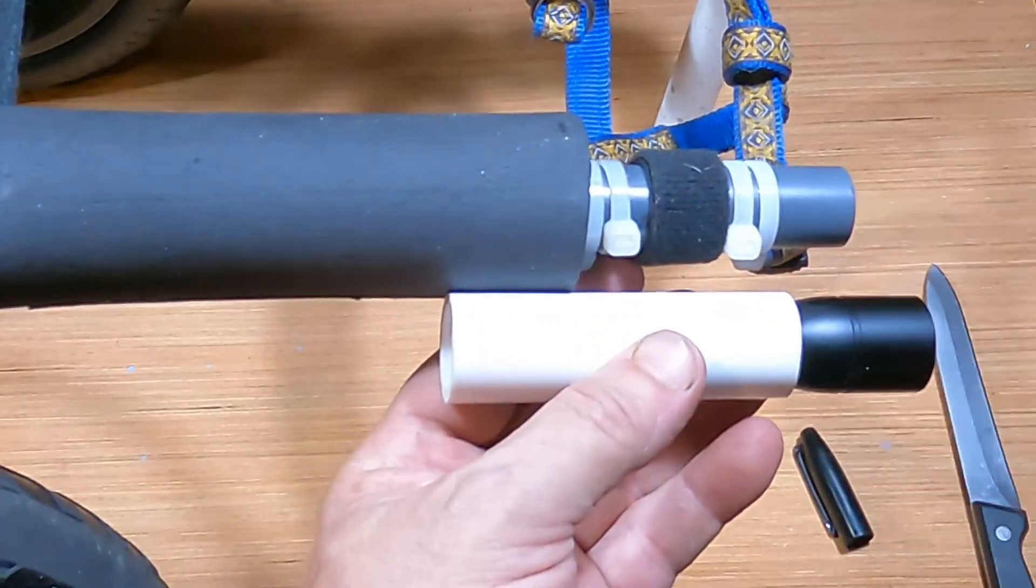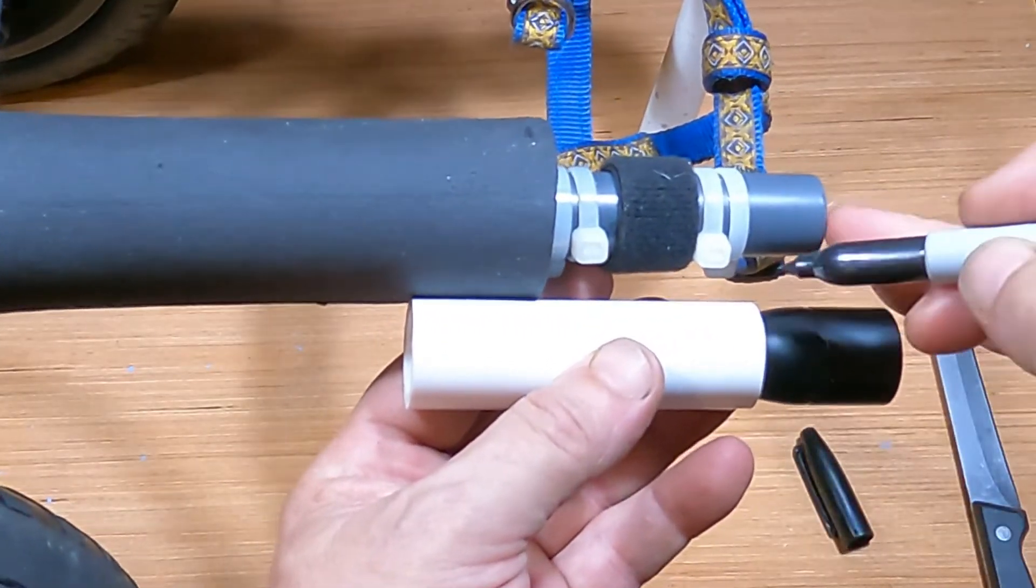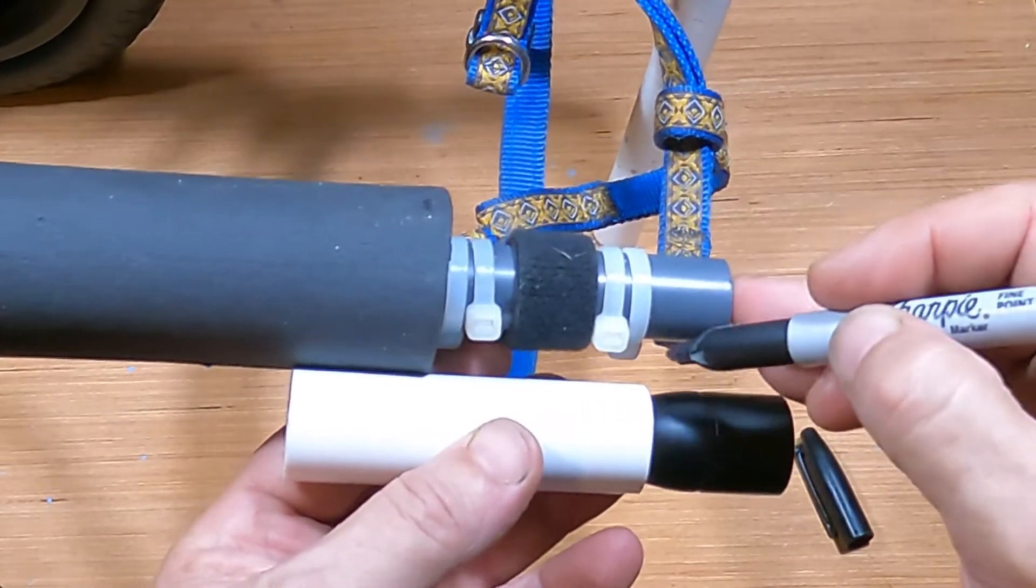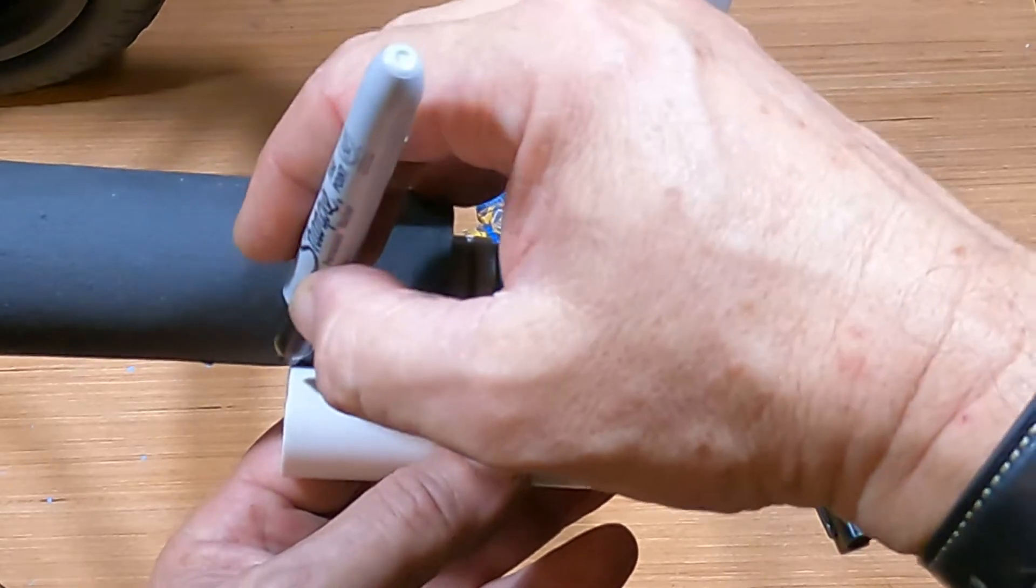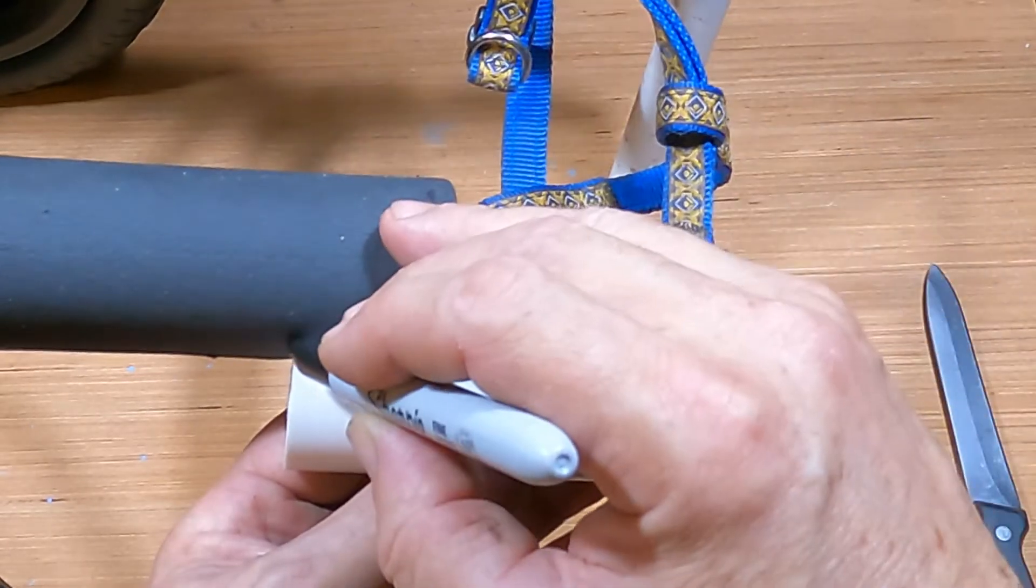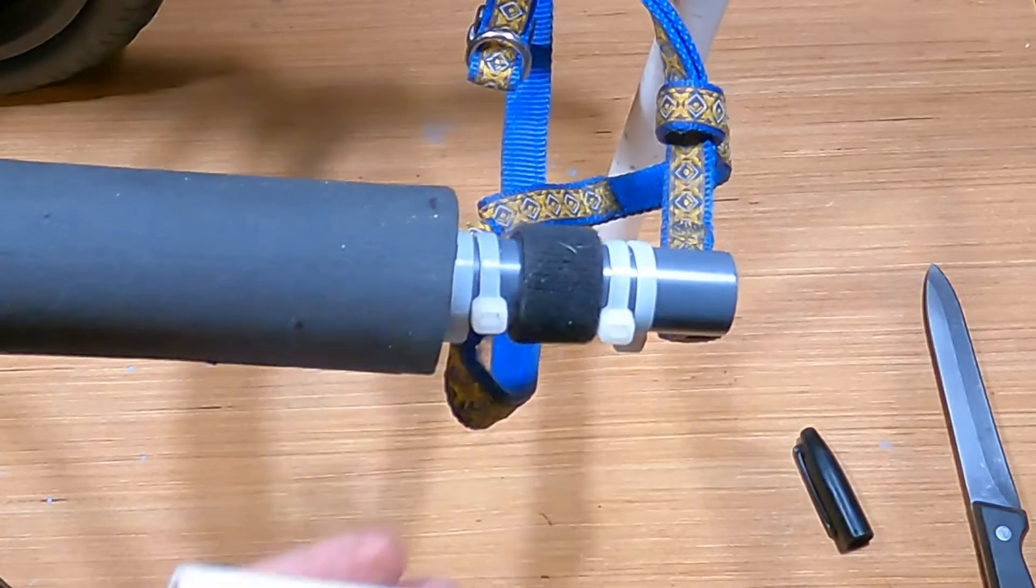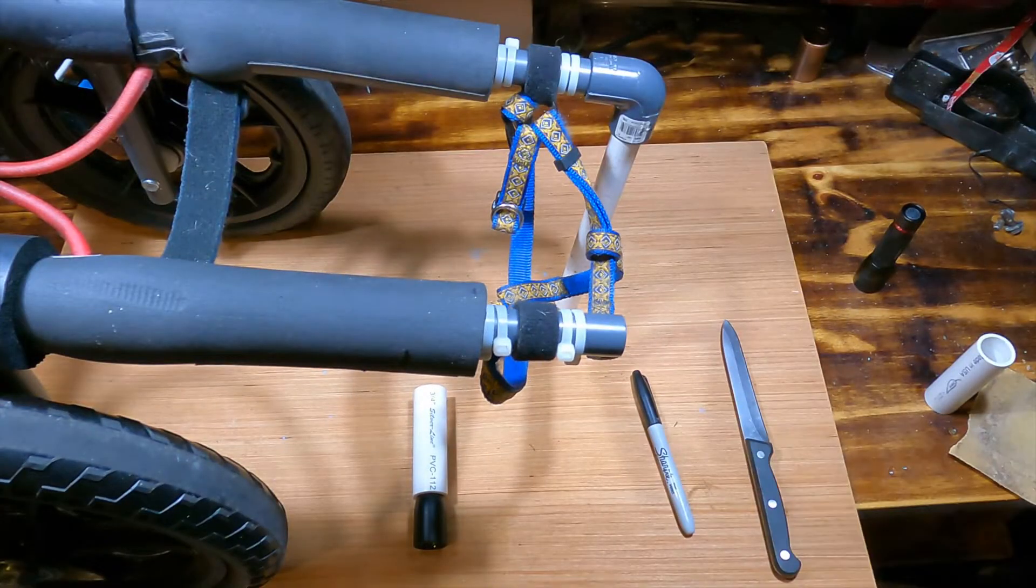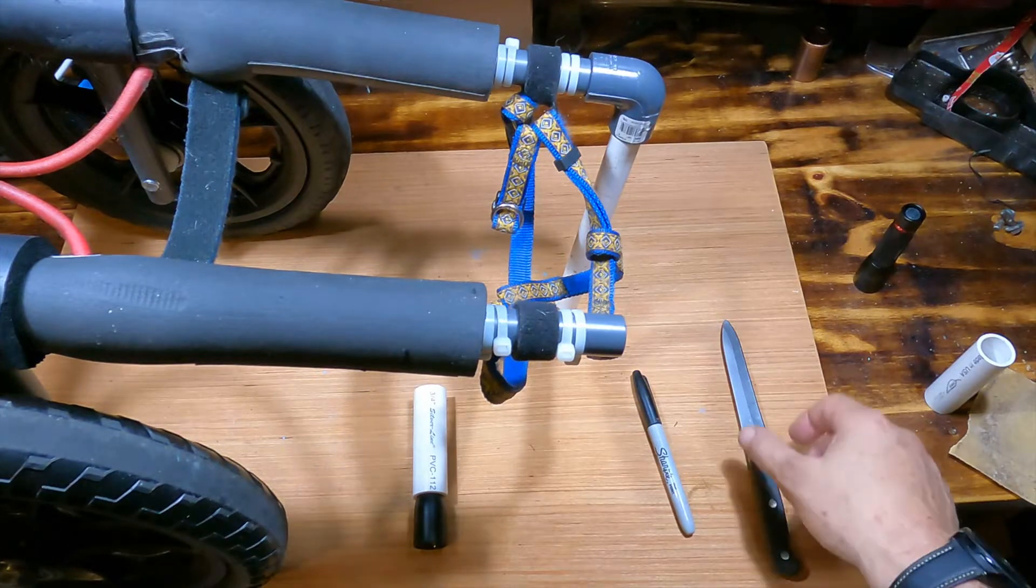So I get the good old Sharpie. Now that's about lined up, if you can see that, that's about lined up. There we go. Now I need to cut that off of there.